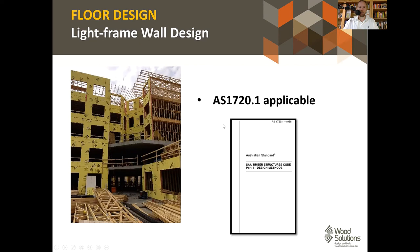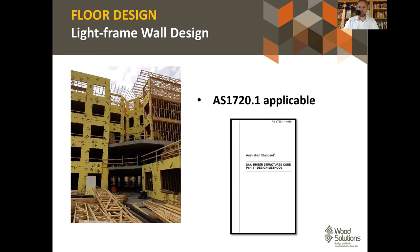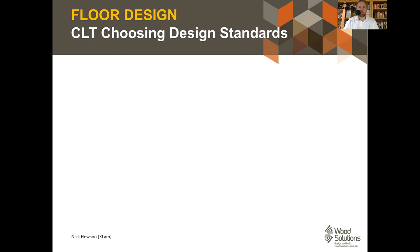For light frame wall design, AS 1720 Part 1 is recommended, applicable for taller buildings as well — you simply increase the stud size and depth and reduce the spacing, as outlined in the design guide. For CLT design it's a little different: it may be designed for deflection, bending, shear, and vibration performance, but the critical issue is which design standard to use. For lightweight systems we can rely on AS 1720 Part 1; for CLT it's more complex.